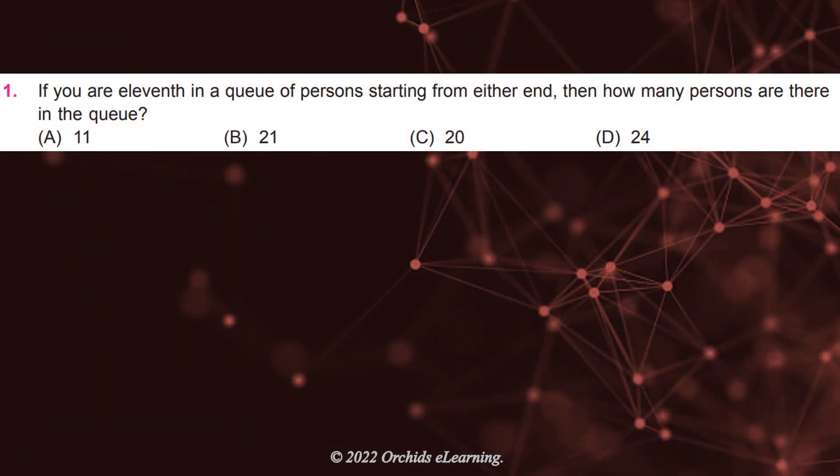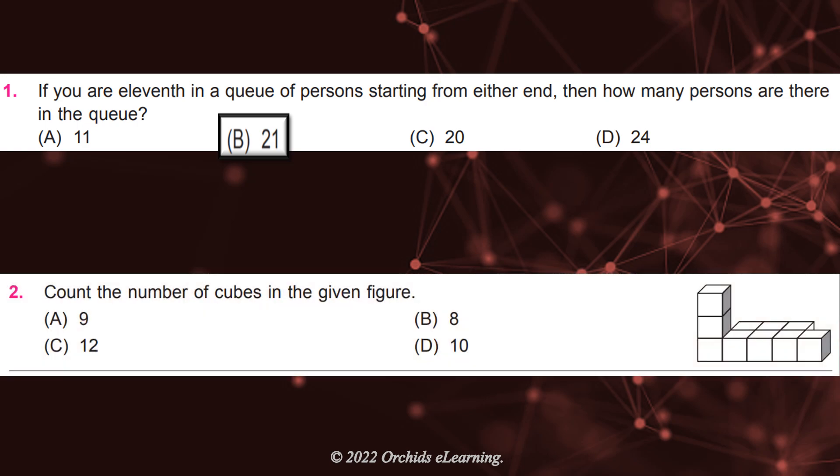If you are 11th in a queue of persons starting from either end, then how many persons are there in the queue? Answer: B, 21. Count the number of cubes in the given figure.